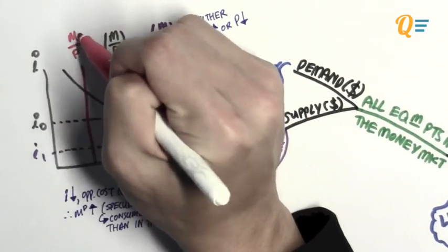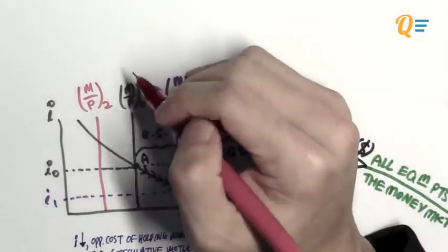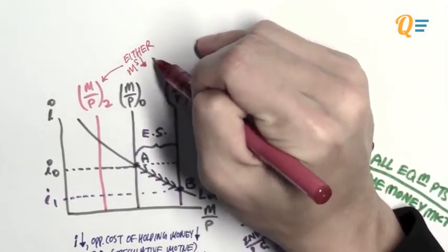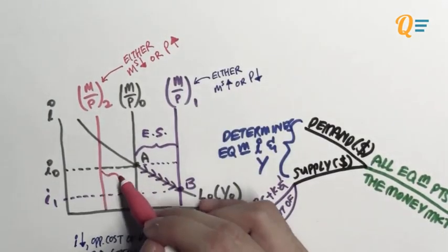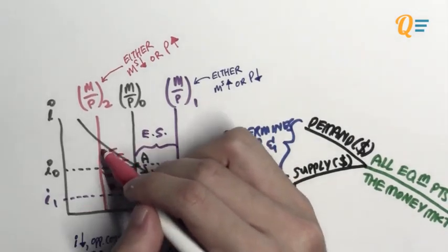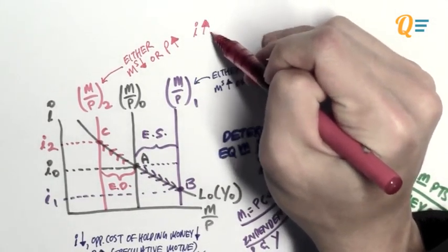Now let's move on to the case where the real money supply falls — the entire vertical line will shift to the left. The real money supply can fall due to two reasons: either the nominal money supply has fallen or the general price level has increased. So if the interest rates did not change, then you have an excess demand for money. When the interest rate level is at I0, demand is more than supply. For the money market to clear to a new equilibrium, interest rates will have to rise, bringing us to point C, where the equilibrium interest rate is now at I2.